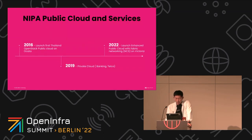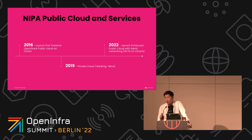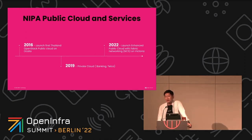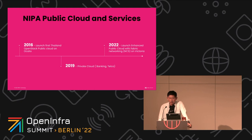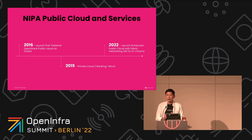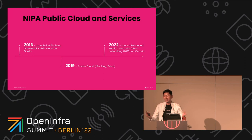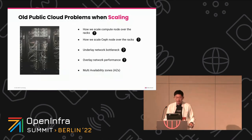We started providing public cloud with OpenStack in 2016, using the Ocata version. In 2019 we launched private cloud for banking and telco customers. In 2022 we launched a new cluster called NIPA Cloud Space, with all this fabric networking using the Victoria version. The old public cloud with Ocata is still running — we still provide service and upgraded it to the end of the Ocata lifecycle.